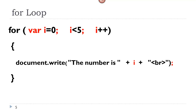Third time around, now i is two. We are going to increment it — the value is two. Is it still less than five? Yes, it is. So now we are going to write again, and we will do that for two more times, up until the point where the value of i is four. At that point, when we were to increment that, it would not be less than five anymore, so the loop would stop. So it would write 'the number is zero' all the way up to 'the number is four' on the web page.